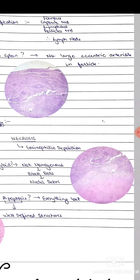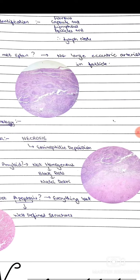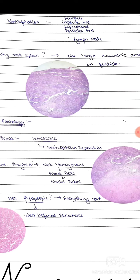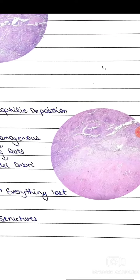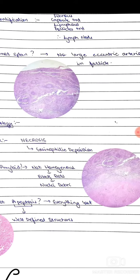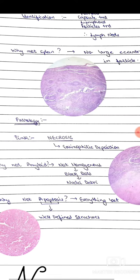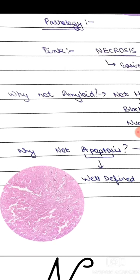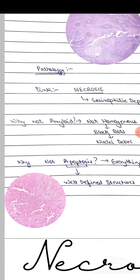Why is it necrosis and not amyloid? Because amyloid is homogenous, but this is not homogenous — we can see black dots which represent nuclear debris. Why is it not apoptosis? Because everything is lost, and in apoptosis we see well-defined cellular structures.